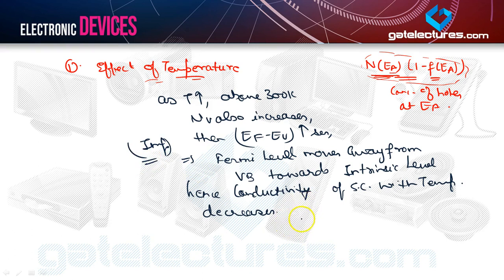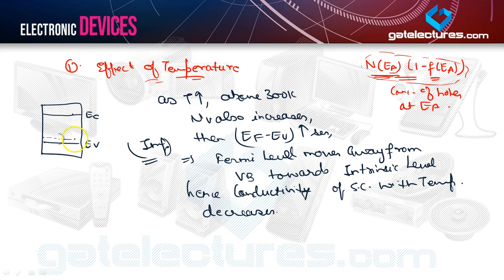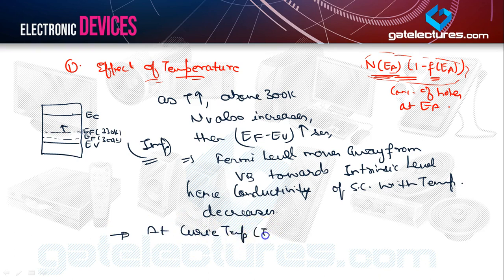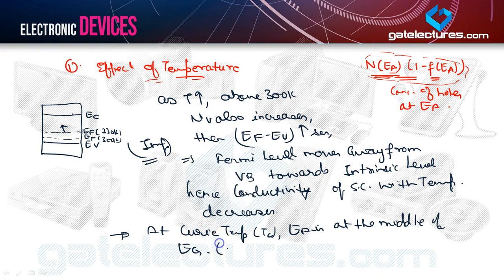The Fermi level moves away from the valence band position. Looking at the band diagram with E_V (valence band) and E_C (conduction band): E_F at 300 Kelvin lies at a certain position, and at higher temperatures like 330 Kelvin it moves further upward. At a critical temperature T_C, E_F reaches the middle of the energy band gap E_G.